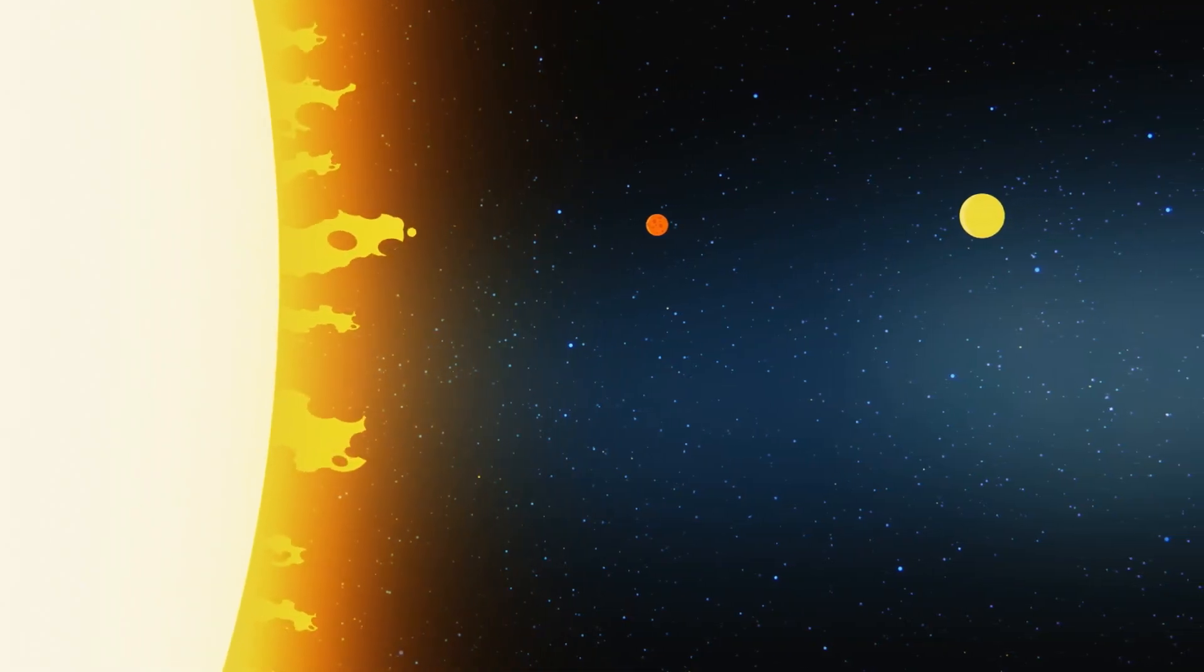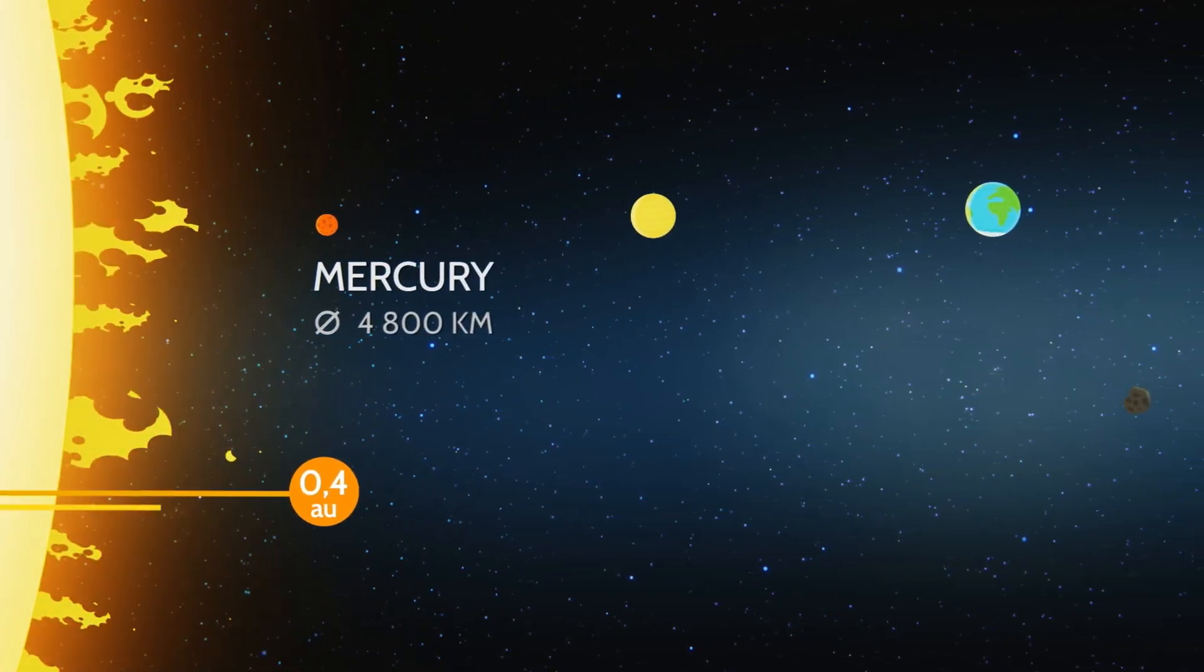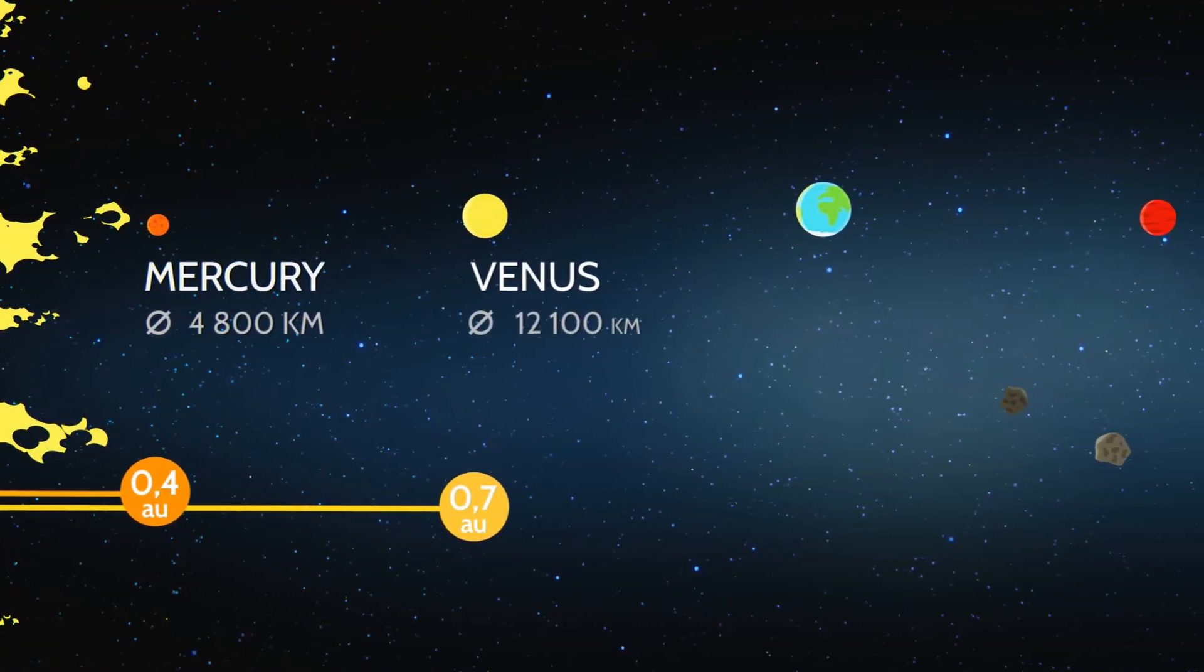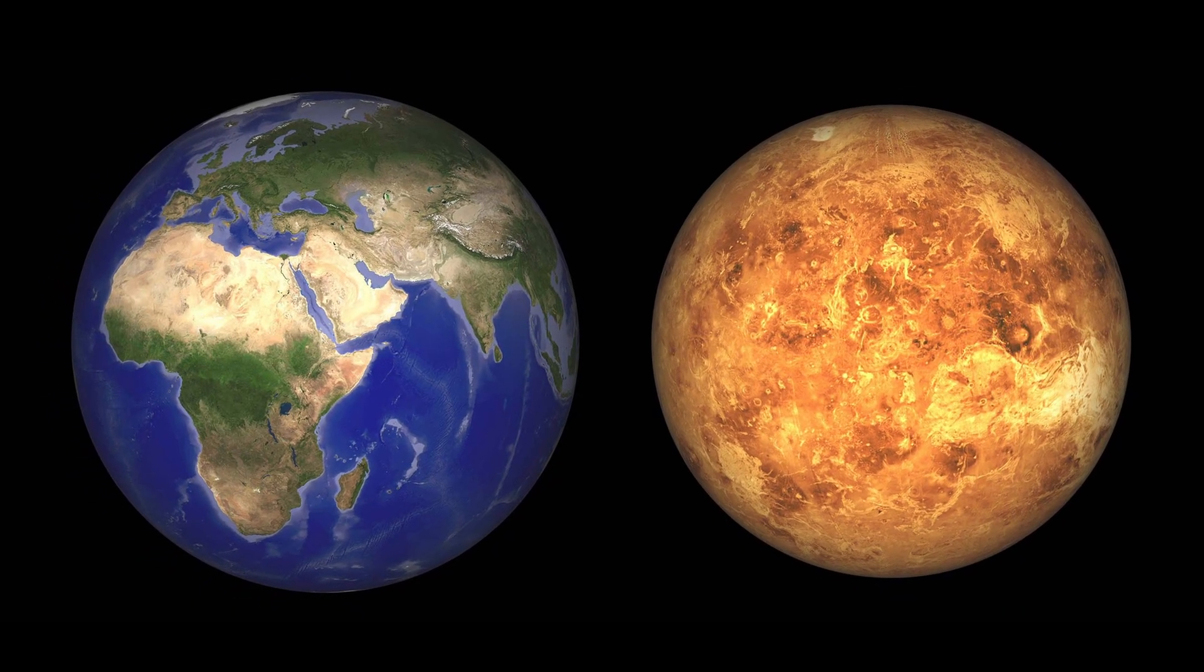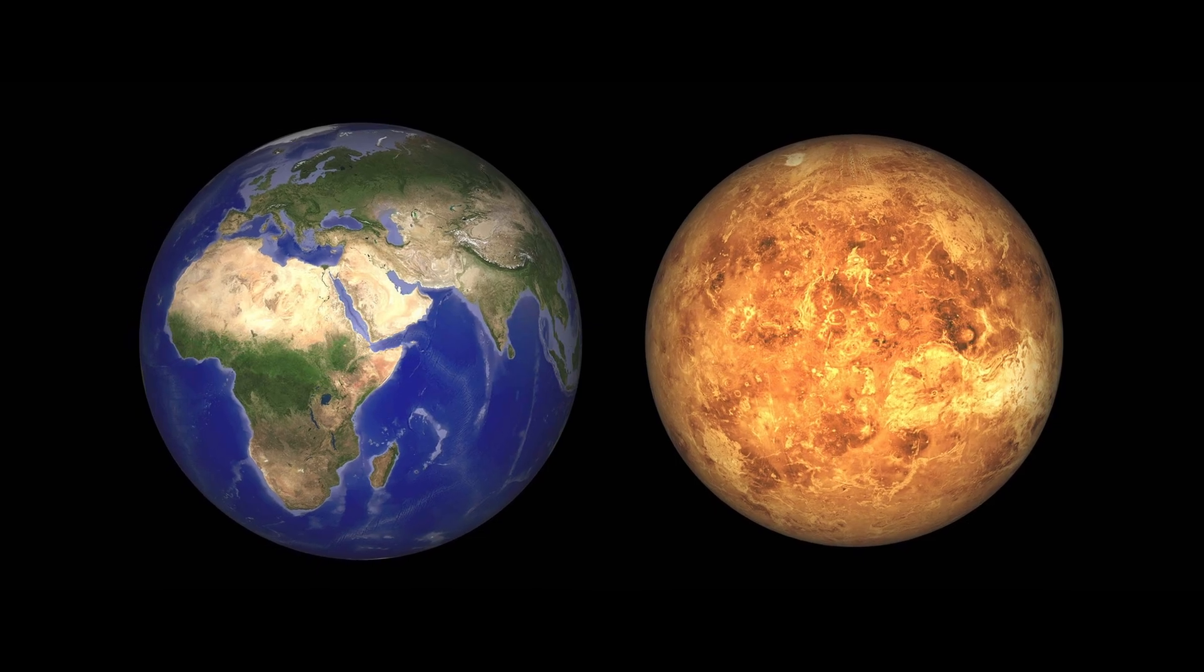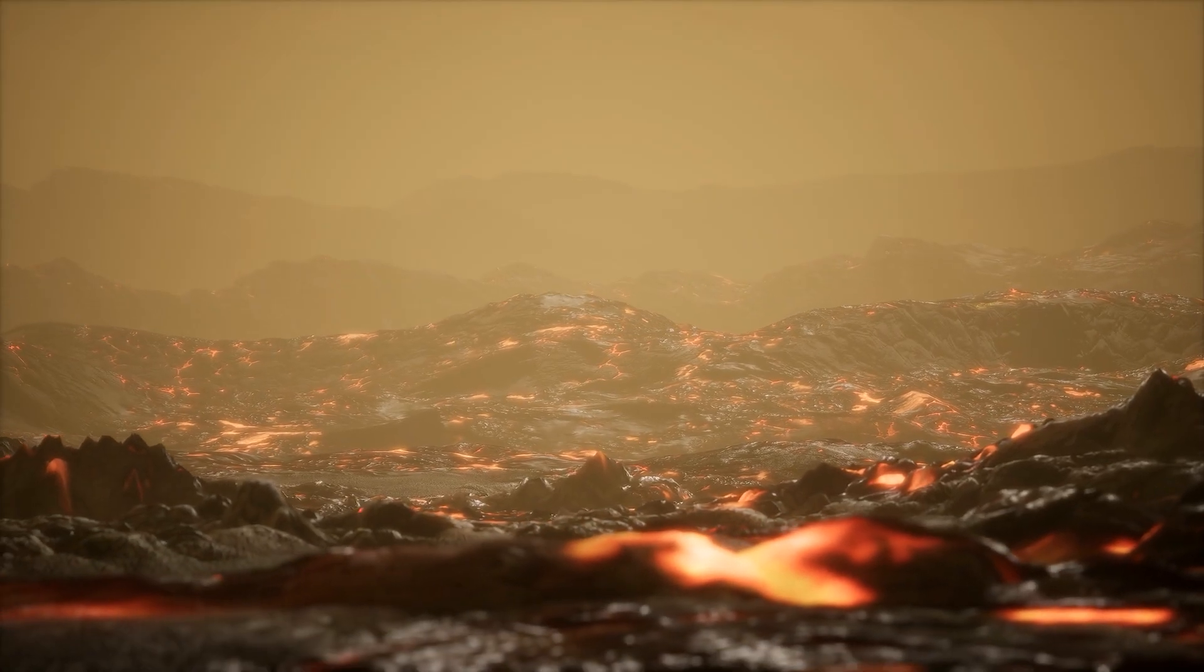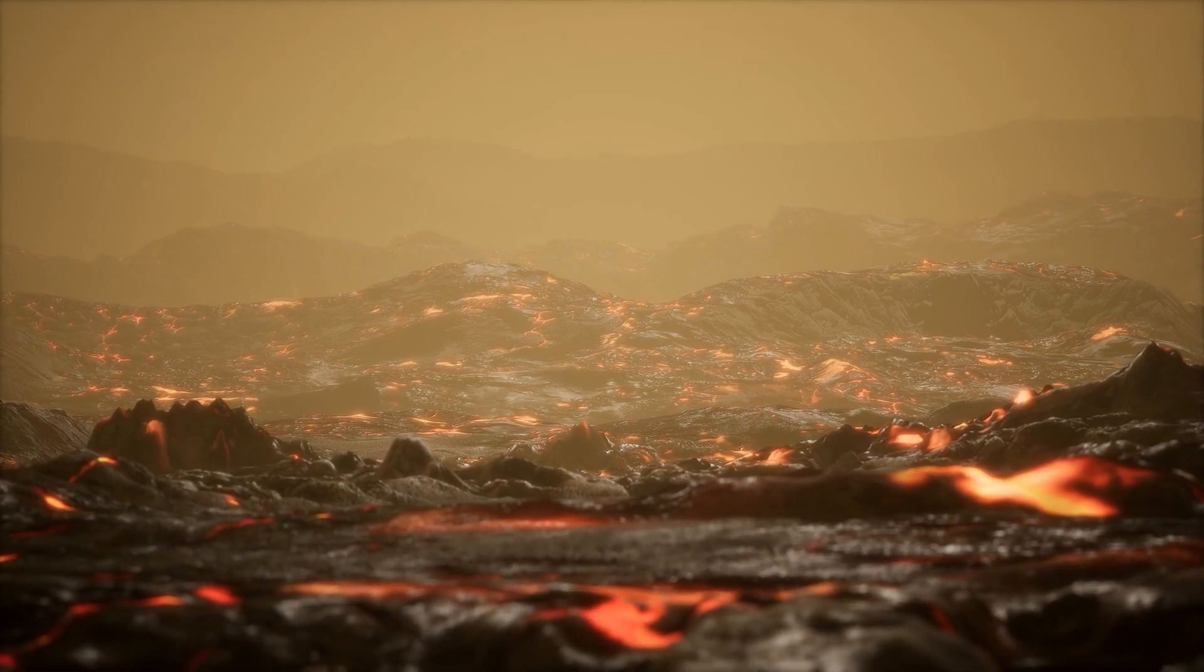Let's start with the basics. Venus is the second planet from the sun, sitting pretty at about 67 million miles away. It's roughly the same size as Earth, so scientists call it our sister planet. But if this is our sister, she listens to death metal, lives in a volcano, and hates visitors.